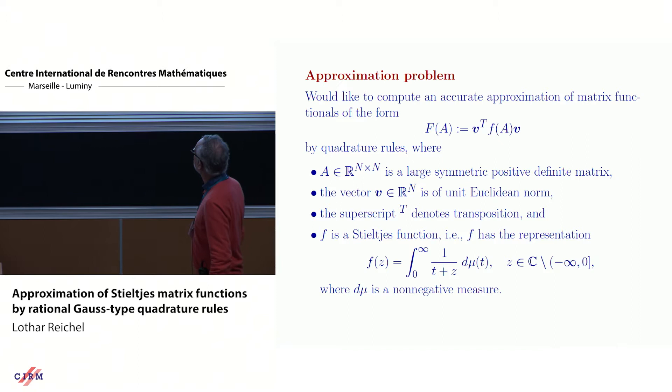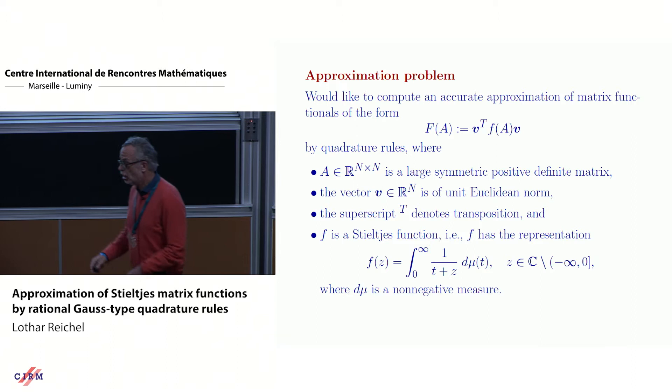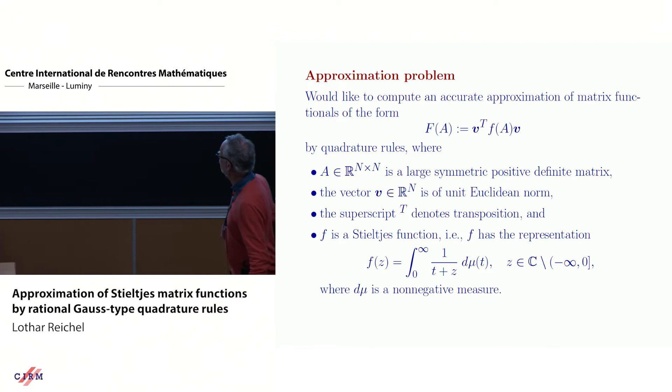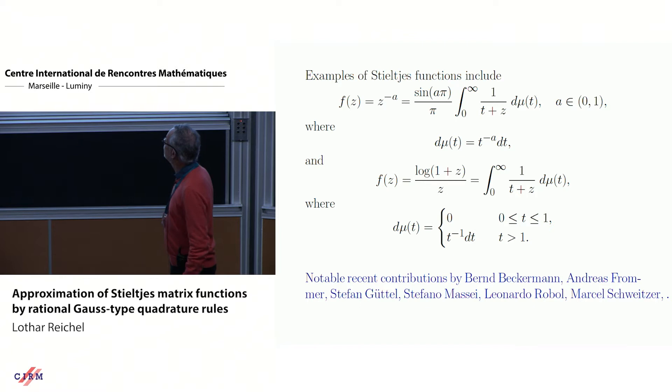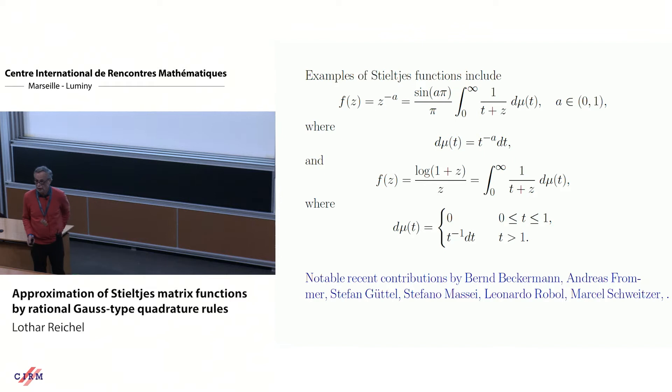The approximation problem is more or less the usual here. We want to approximate f of A times v, where v is a vector, A is a large symmetric positive definite matrix, and f is some function, in particular, Stieltjes function. So here they are in the bottom. It's defined by a measure mu. First we look at some examples: z to the minus A, or log of one plus z over z, they can all be expressed as Stieltjes functions. A couple of people here in the audience and many others have worked on Stieltjes function and approximation of these.